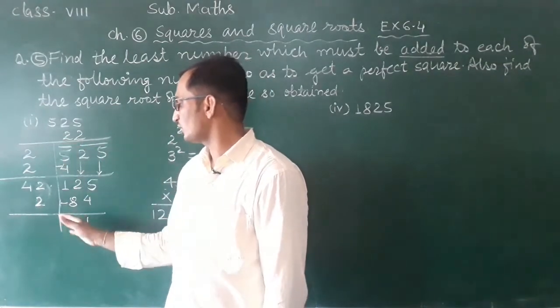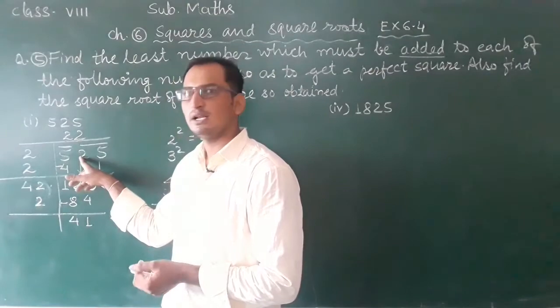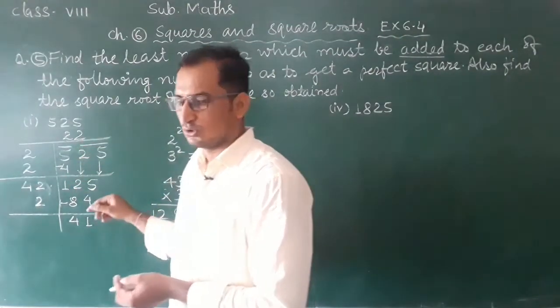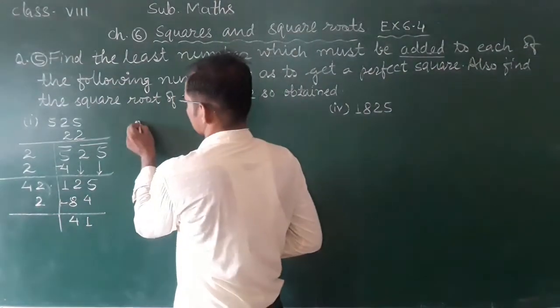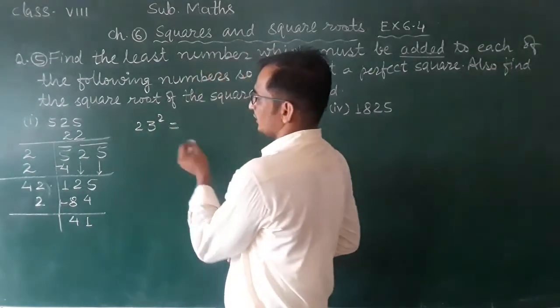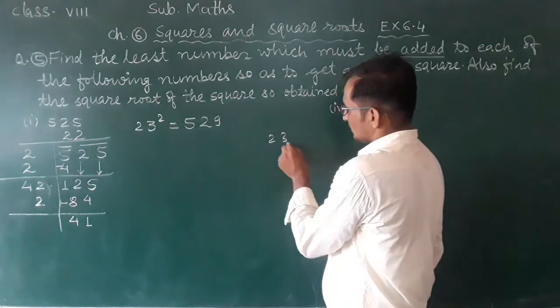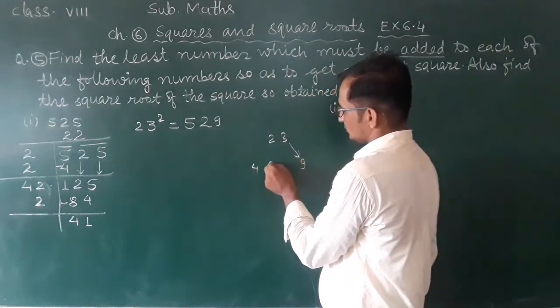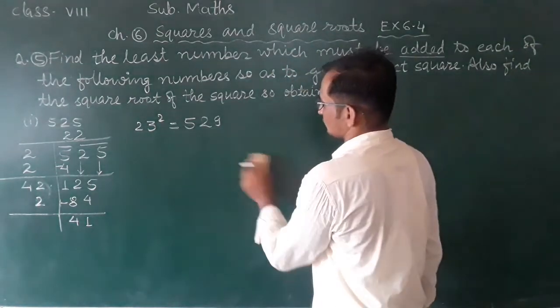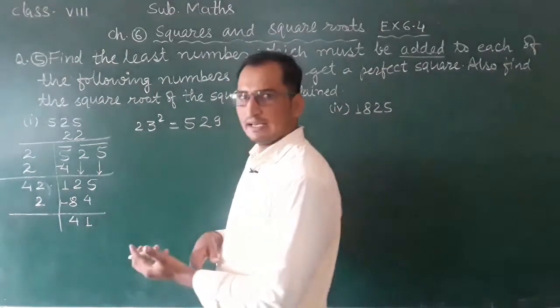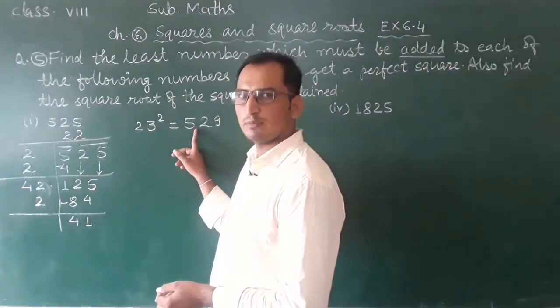The quotient is 22. We need to find the next perfect square, which will be 23 squared. Let me calculate 23 squared: 3 times 3 is 9, 2 times 3 is 6 plus 1 carry is 7, making 529. So 23 squared equals 529.